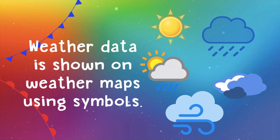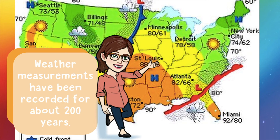Weather data is shown on weather maps using symbols — sunshine meaning it's a sunny day, a sun behind a cloud meaning partly sunny, and different images for a cold front or a warm front. Weather measurements have been recorded for only about 200 years. So when climatologists are using their data, they only have about 200 years of information to draw from. As we get more and more information over time, climatologists will be better able to study our climate.